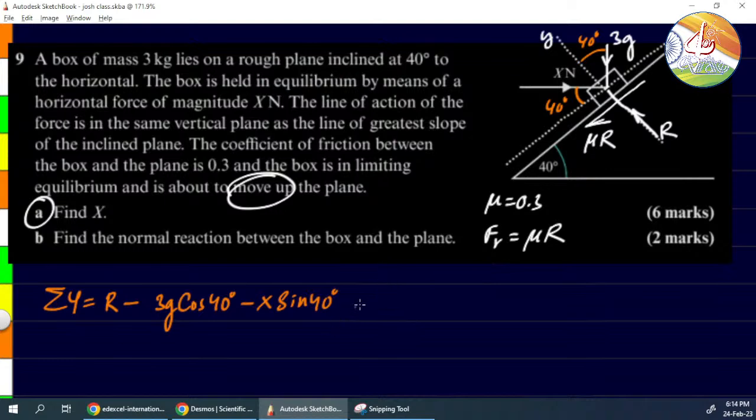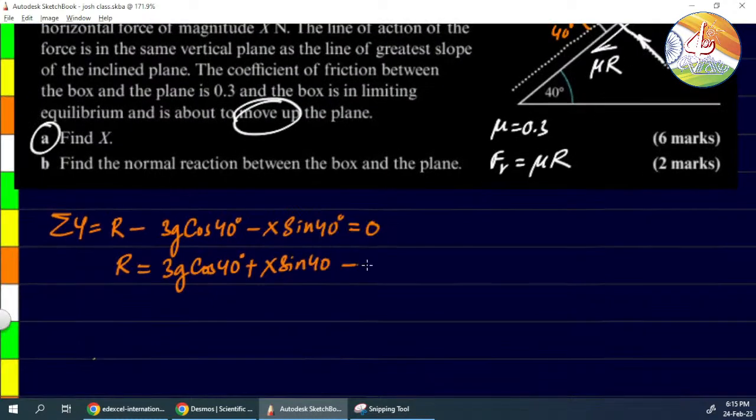The other force is in the x-direction, so no components of that. R value will be unknown, right? So let's write the equation for R. R is 3g cos 40 plus X sin 40. So this, let us call it as equation one.